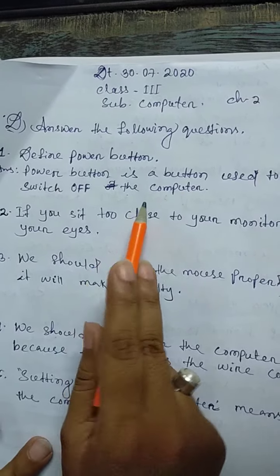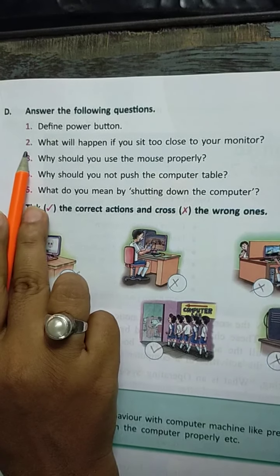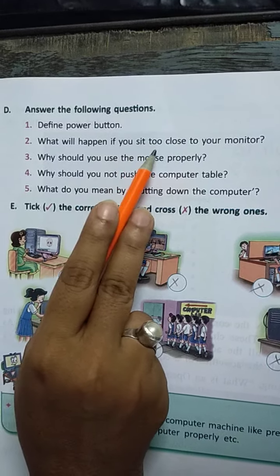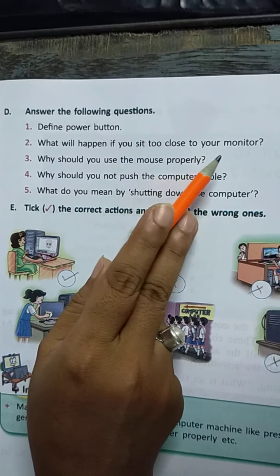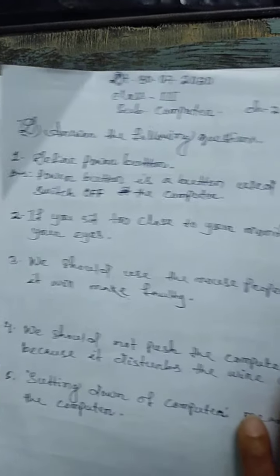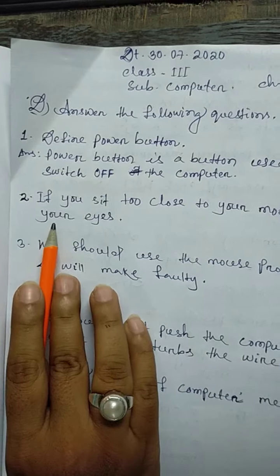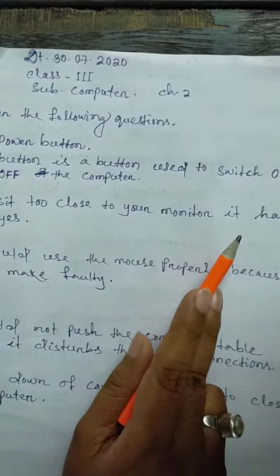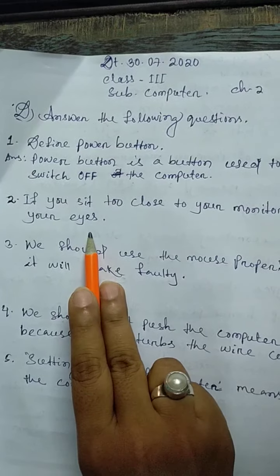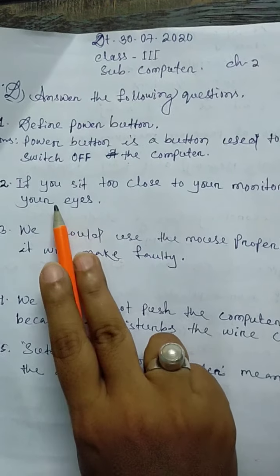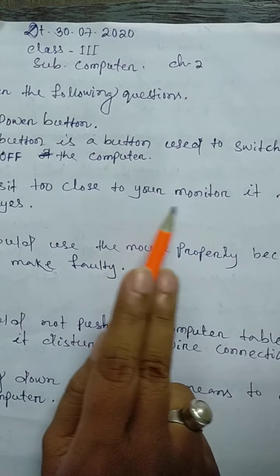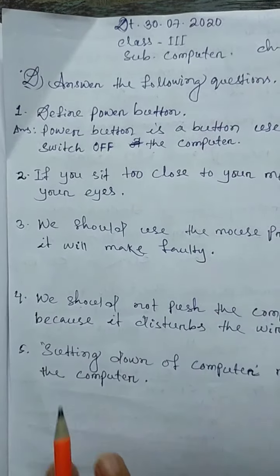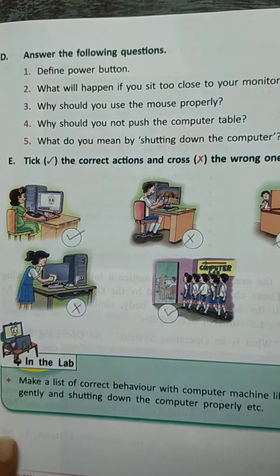Question number 2: what will happen if you sit too close to your monitor? Here is the answer: if you sit too close to your monitor, it harms your eyes.